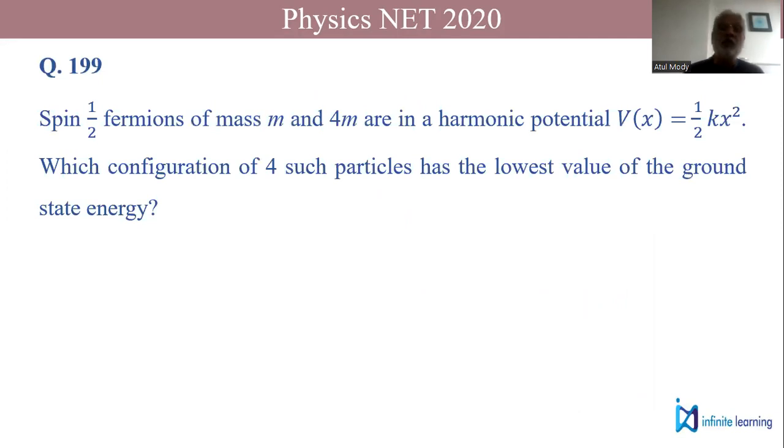Question 199: You are given spin-1/2 fermions of mass m and 4m. So there are two types of fermions, one has mass m and the other has mass 4m, but both have spin-1/2 and they are in a harmonic potential V(x) = 1/2 kx².